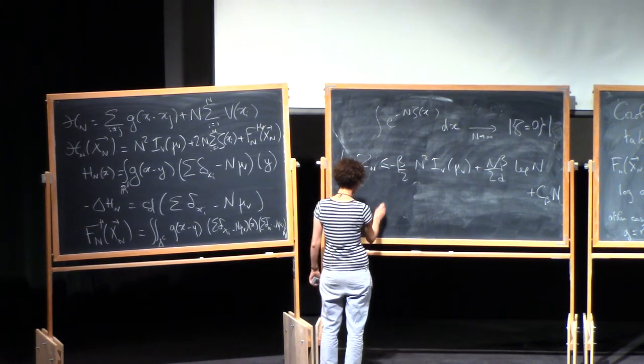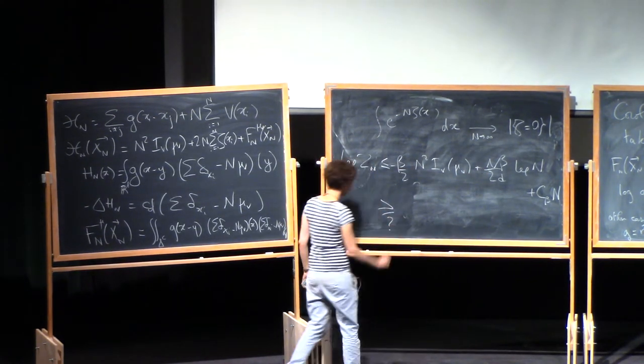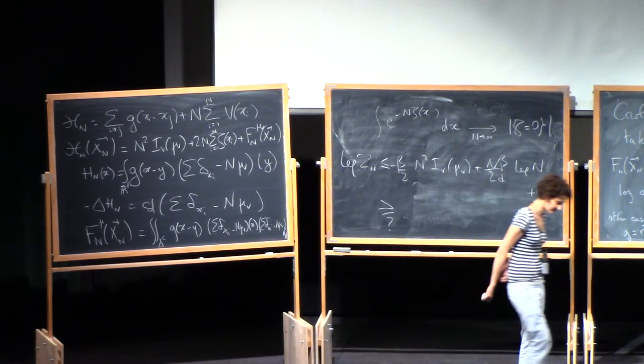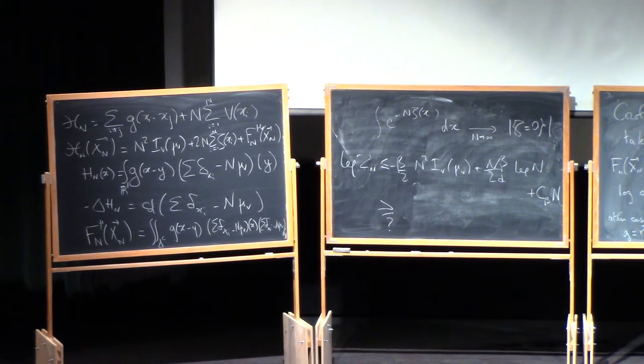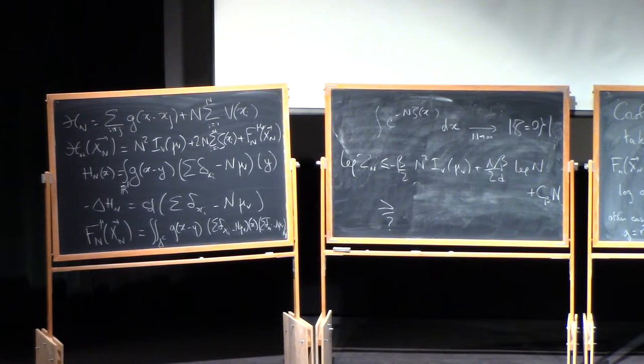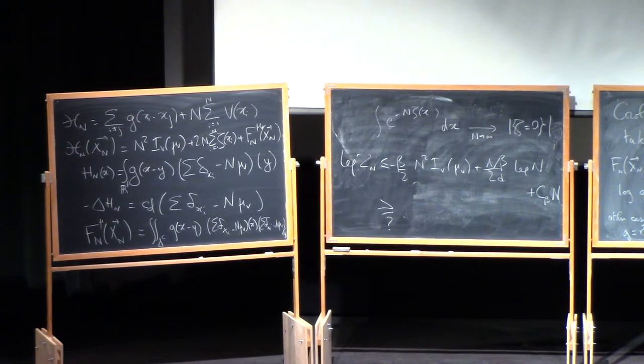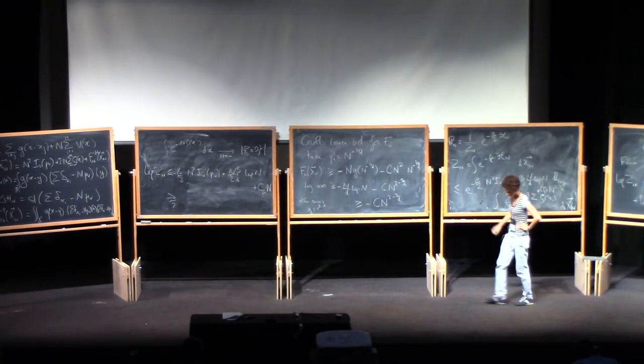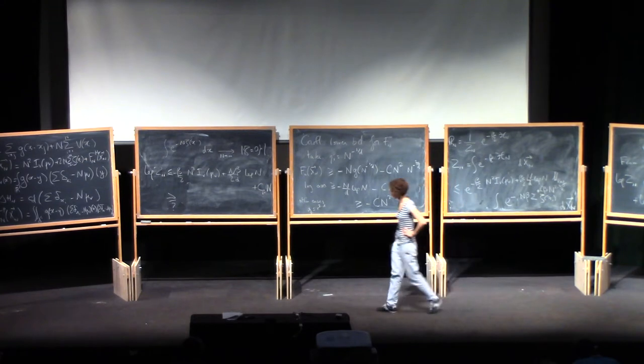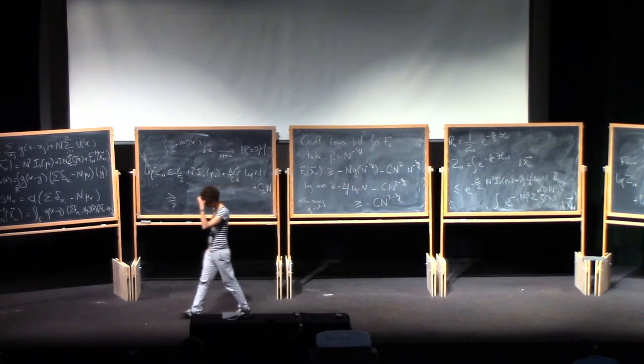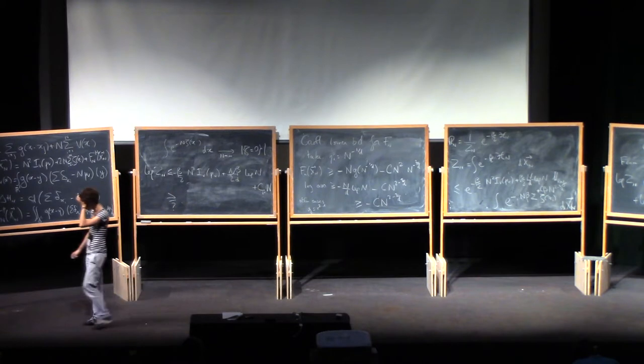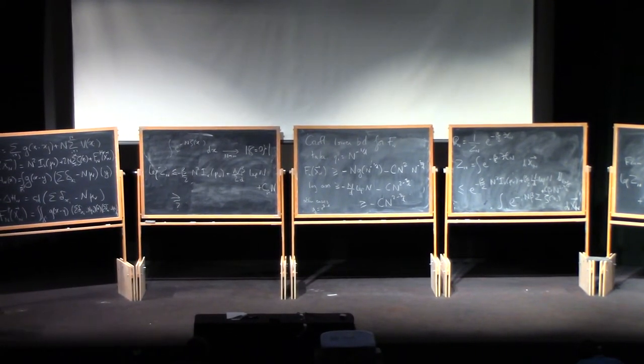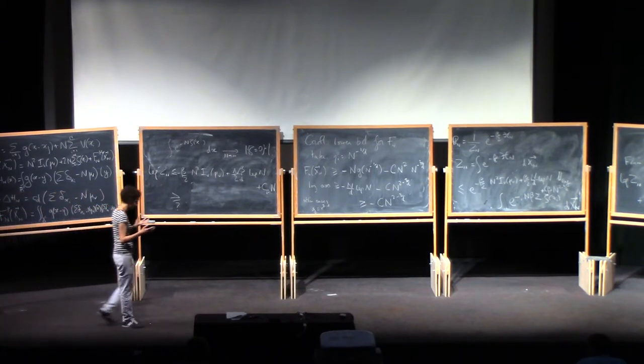n beta over 2d log n plus c, which possibly depends on beta, times n. And in fact, this is good. This is the right behavior. So what is much harder is to obtain a lower bound. You want to obtain a corresponding lower bound with maybe a different constant. So if you think of how you obtain an upper bound, well, you bounded the energy from below. So to obtain a lower bound, you will have to bound the energy from above. But okay, the energy is not always bounded from above.